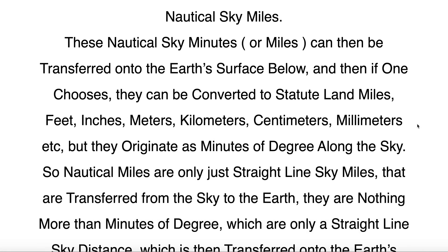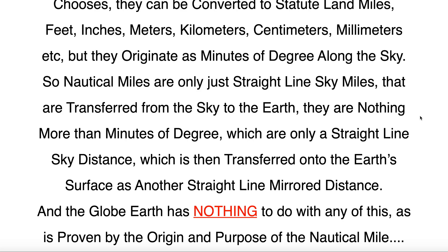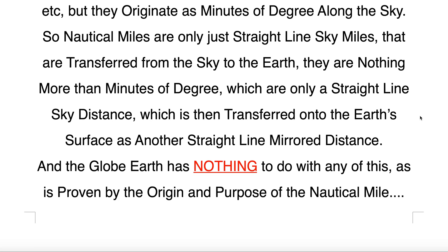These nautical sky minutes or miles can then be transferred onto the Earth's surface below, and then if one chooses, they can be converted to statute land miles, feet, inches, meters, kilometers, centimeters, millimeters, etc. But they originate as minutes of degree along the sky. So nautical miles are only straight-line sky miles that are transferred from the sky to the Earth. They are nothing more than minutes of degree, which are only a straight-line sky distance, which is then transferred onto the Earth's surface as another straight-line mirrored distance.